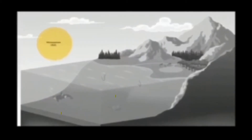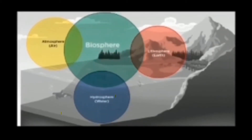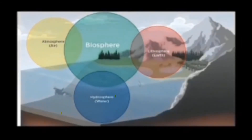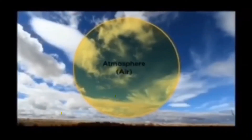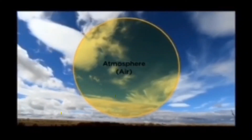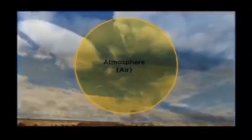Let's focus on the atmosphere, the lithosphere, the hydrosphere, and the biosphere. These four systems make up the Earth. Take a deep breath — the air that you breathe in comes from our atmosphere. What is the atmosphere? The atmosphere is a thin layer of gases surrounding the planet.